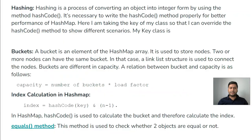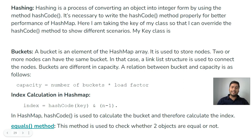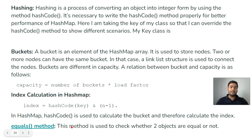Hashing means implementing the hashCode method. The number of buckets is 16 and the load factor is 0.75. The index is calculated using the formula: (n-1) & hashCode(key), where n is the capacity. The hashCode method is used to calculate the bucket and the index. The equals method checks whether two objects are equal — both play a very important role in HashMap's internal working.